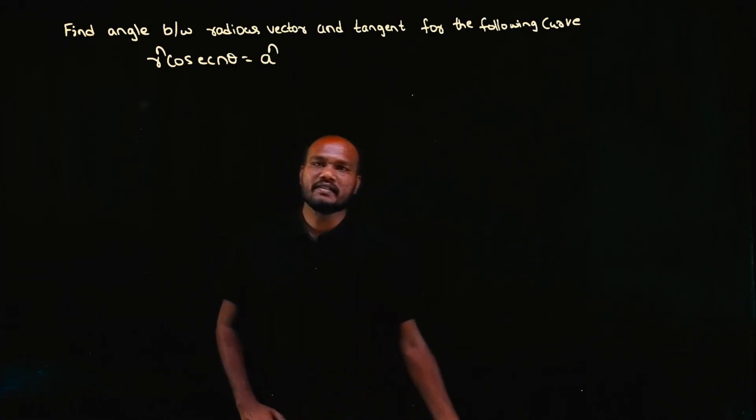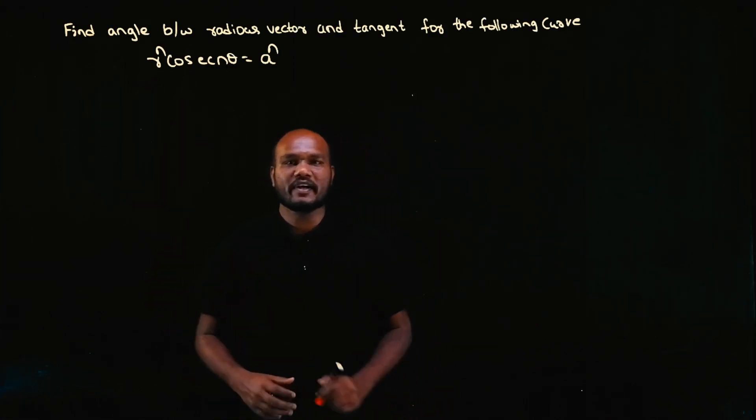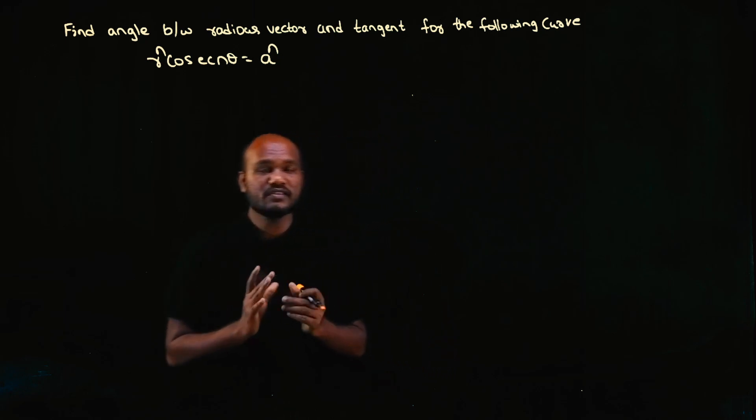Hey guys, welcome to another video. In this video series, we are solving 2021 Scheme M1 questions from the first module on polar curves. Make sure to subscribe to this channel for more videos like this one. The question asks us to find the angle between radius vector and tangent.